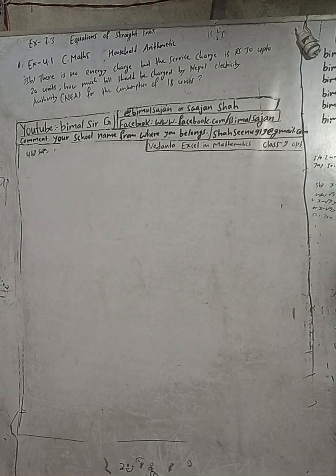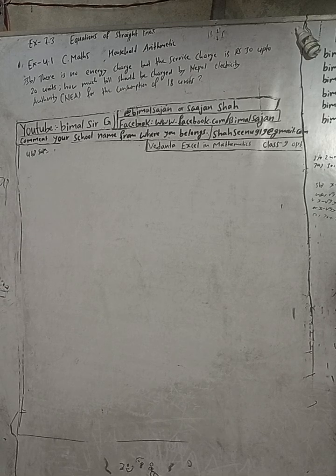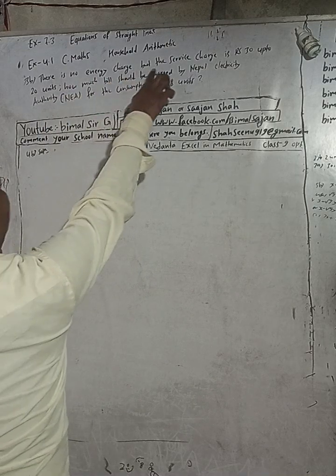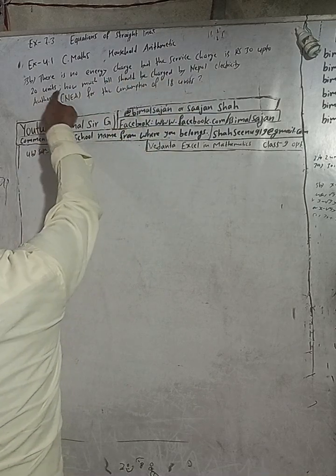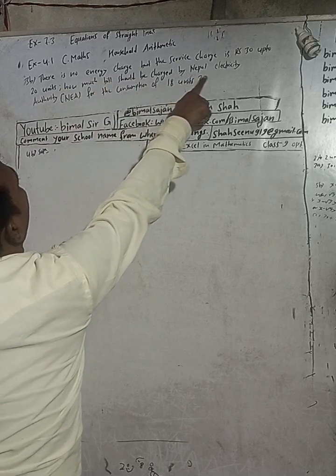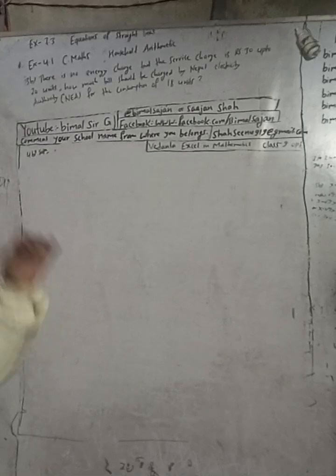Hi class 9 and 10 students, welcome back to Vimal Sarji's YouTube channel. This is question number 4.1 compulsory math, that is C math household arithmetic, question number 3B. A subscriber requested this. The question: there is no energy charge, but the service charge is 30 rupees up to 20 units. How much bill should be charged by Nepal Electricity Authority for the consumption of 18 units?